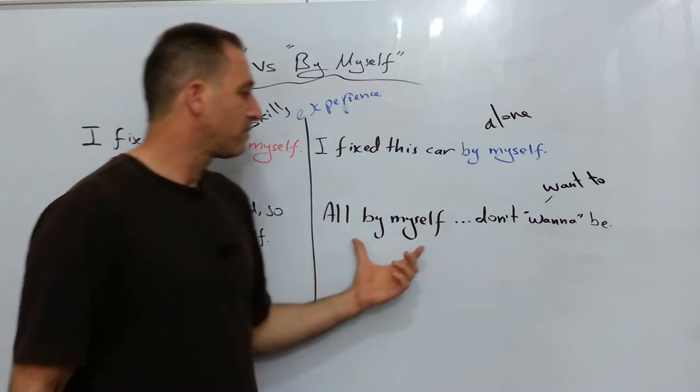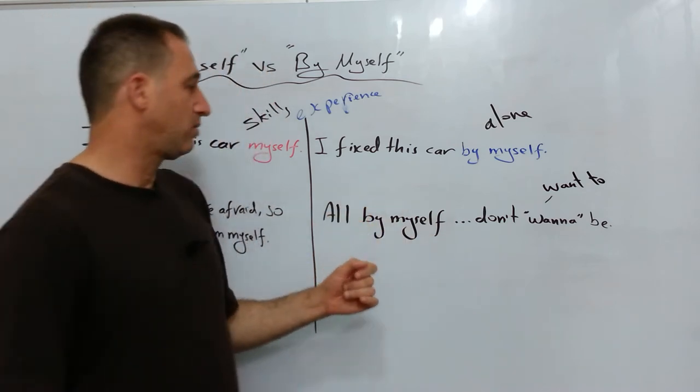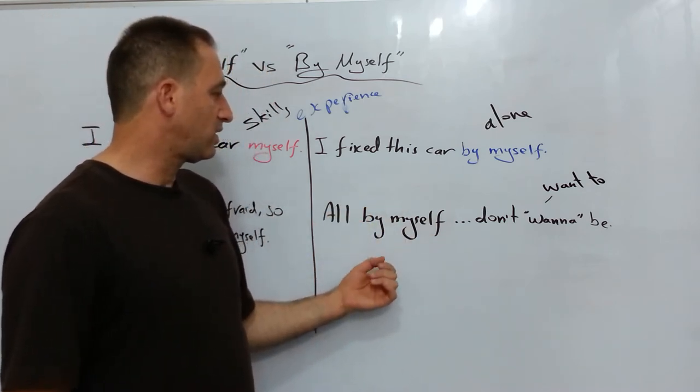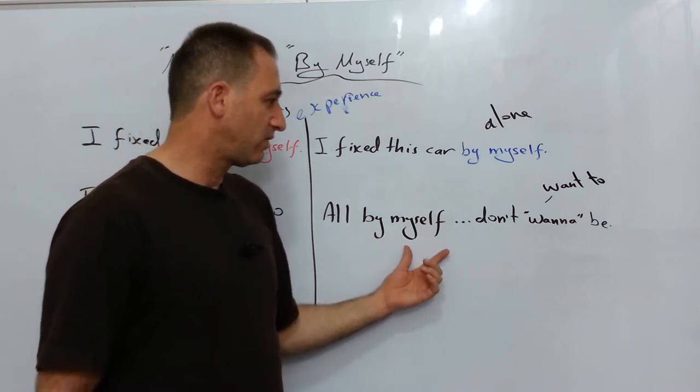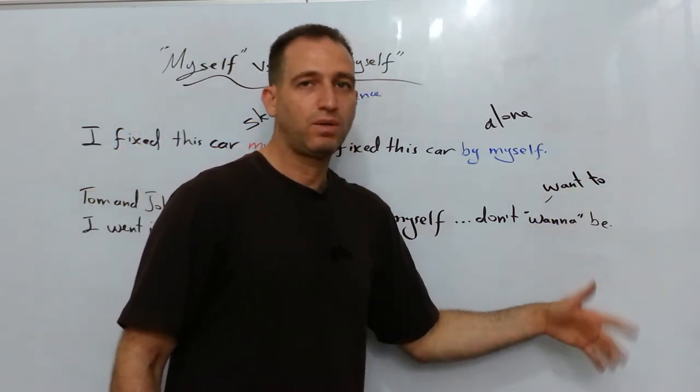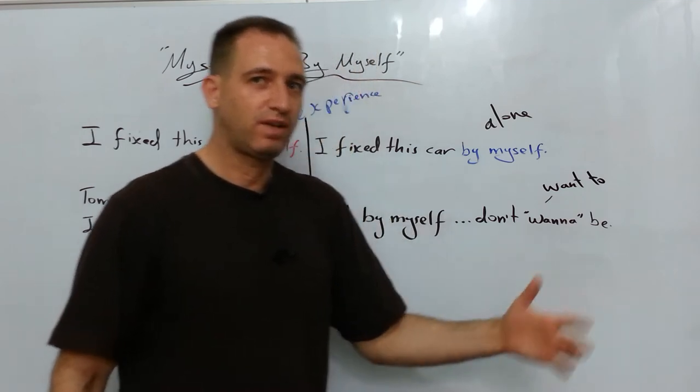That's why we have a song for somebody like Celine Dion, for example. She says in the song, 'all by myself, don't wanna be.' And then she says again, 'all by myself,' stuff like that.